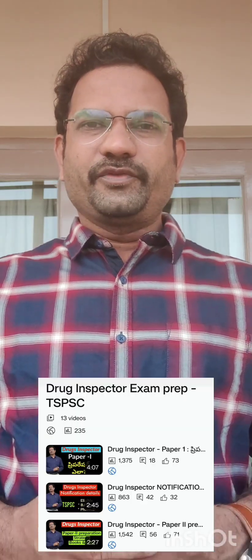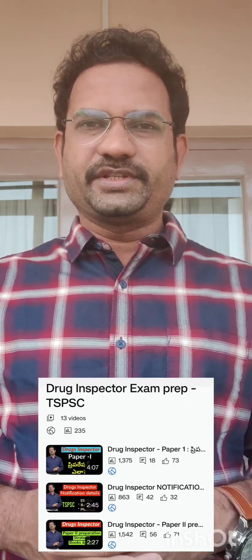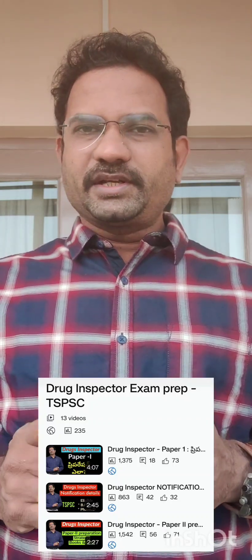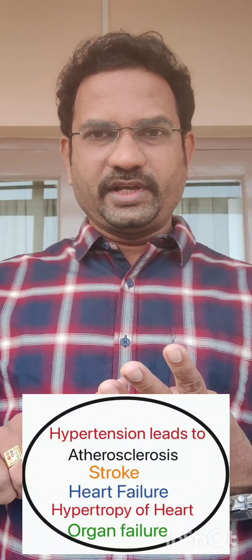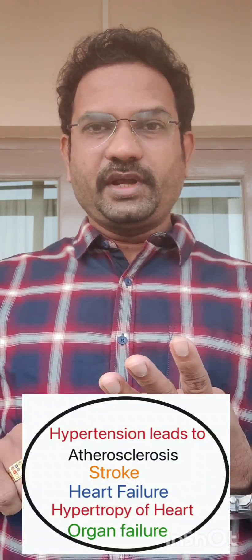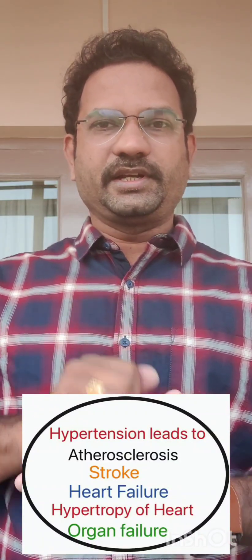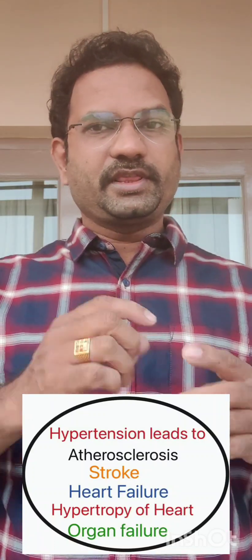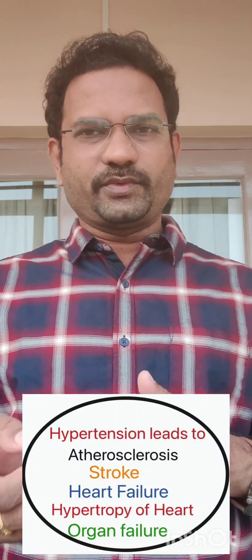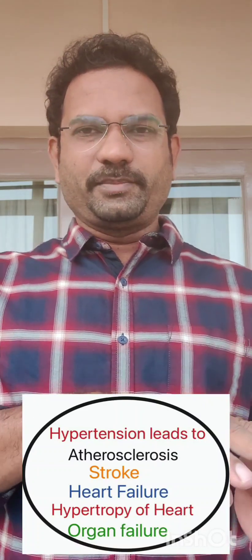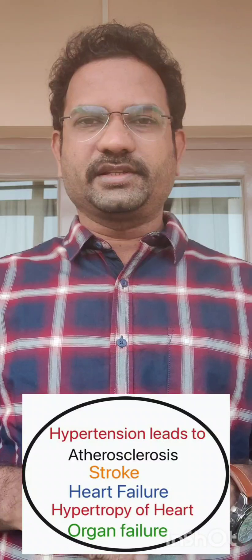Hello everyone, welcome to the video on hypertension pathophysiology. What is hypertension? An increase in blood pressure is known as hypertension. Hypertension is a silent killer — in the long term it causes stroke, atherosclerosis, heart failure, cardiac hypertrophy, and organ damage, especially kidney damage. It is like a buy-one-get-one offer: if someone has hypertension, they will get other cardiac diseases as well.